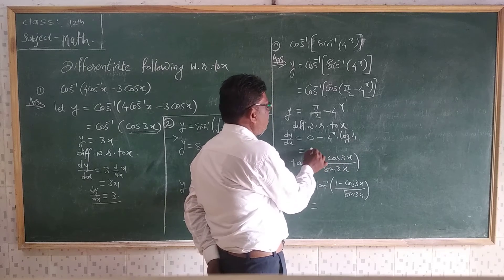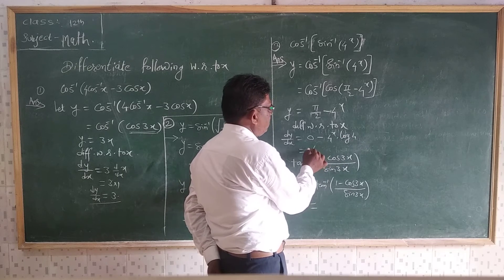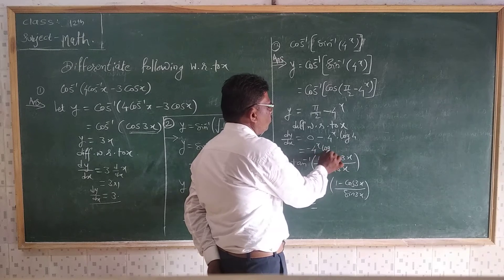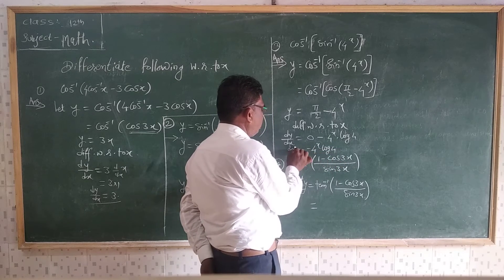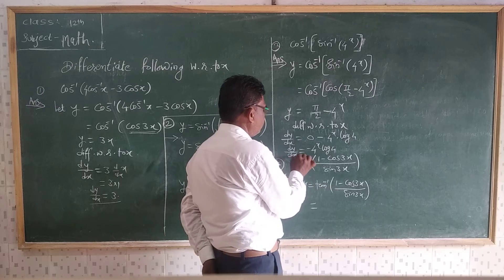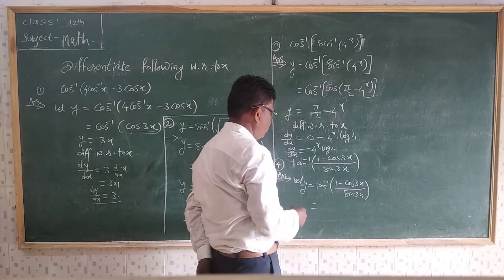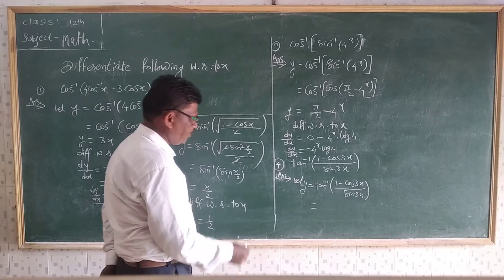So the answer is minus 4^X log 4. That is your dy/dx of this given example. Then see the next example.